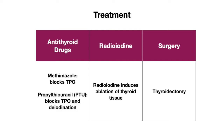Methimazole works by blocking thyroid peroxidase, which is key for thyroid hormone synthesis. PTU also blocks thyroid peroxidase, but it also inhibits deiodination, which is where T4 is converted to T3. Methimazole is the primary drug used to treat Graves' disease because it has a lower incidence of side effects, is more effective, and has a longer duration of action allowing once-daily dosing. Something important for boards: PTU is often preferred during the first trimester of pregnancy, mainly because methimazole has more teratogenic effects in the first trimester.